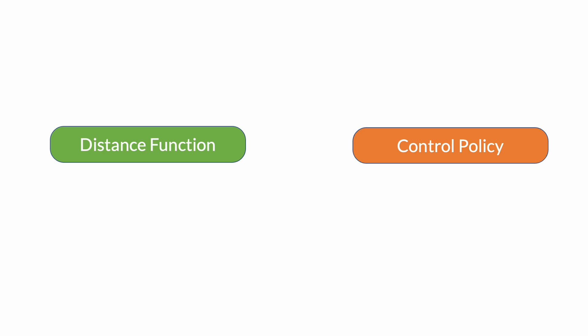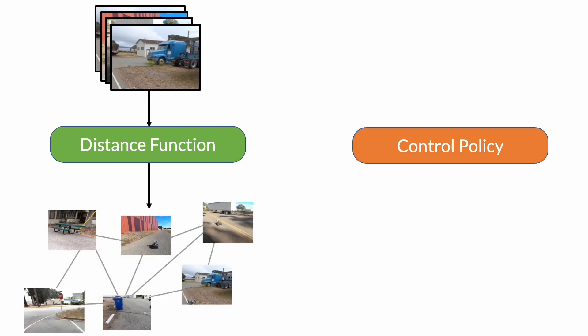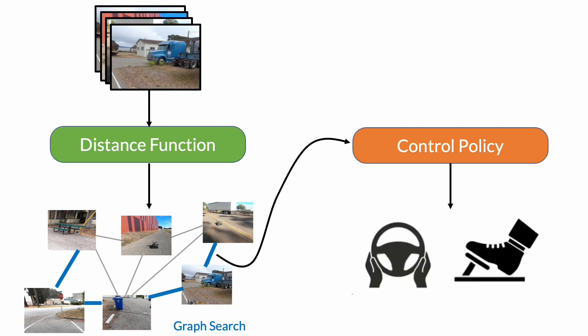Such a topological graph has two key components, a learned distance function and a goal-conditioned control policy. Given the sample trajectories from the target environment, the learned distance function infers connectivity between them to create a topological graph over images. A simple graph search algorithm can then be used to propose a sequence of subgoals towards the goal node in the graph. Given this sequence of subgoals, the goal-conditioned policy can be used to control the robot one subgoal at a time.